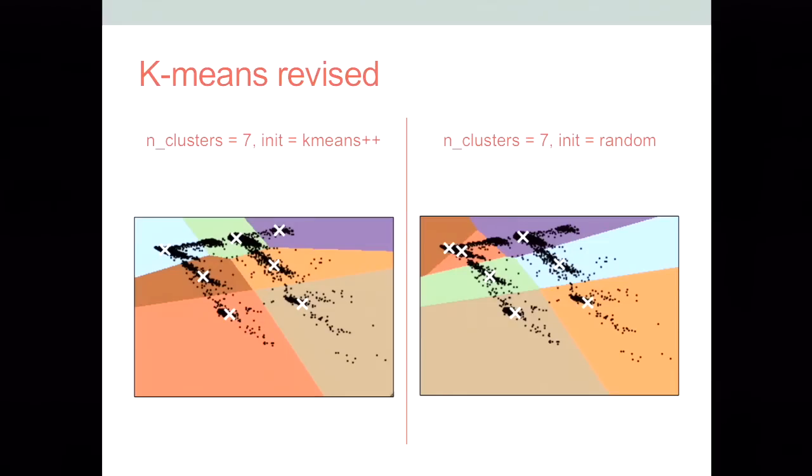So if we move on to choosing seven clusters, the left one there is what we did before. It looks pretty good. On the right, though, that's, again, using random for the init parameter. And again, we have in the top left corner there, we have two Xs that are really close. So maybe not so great.